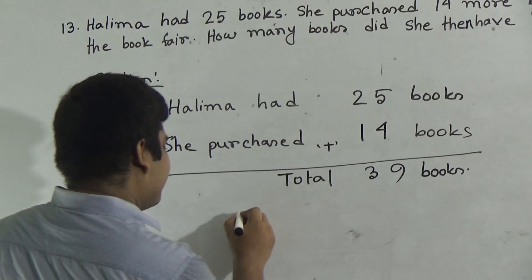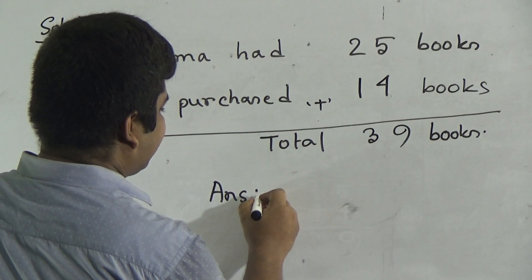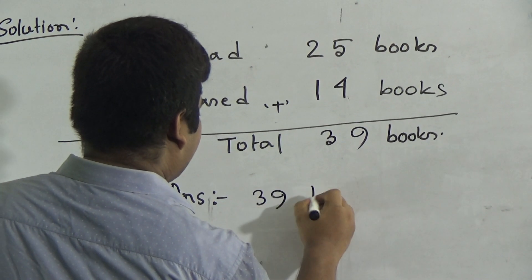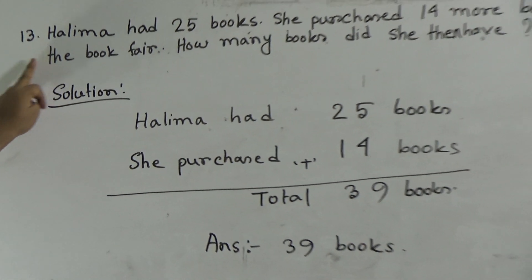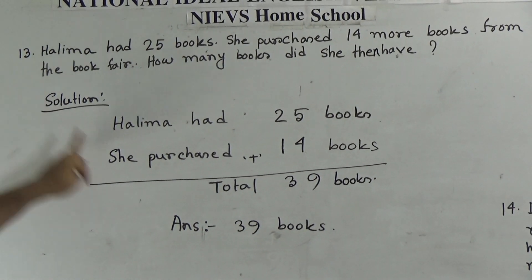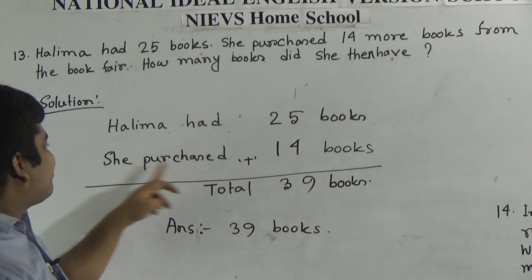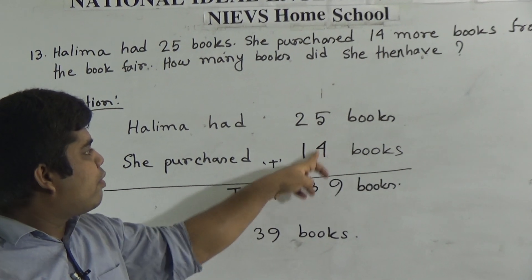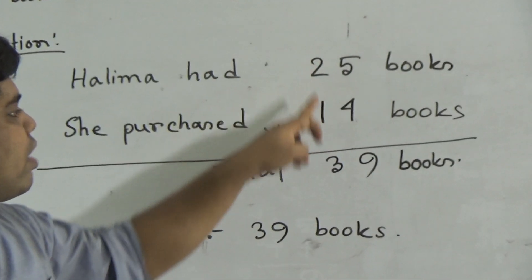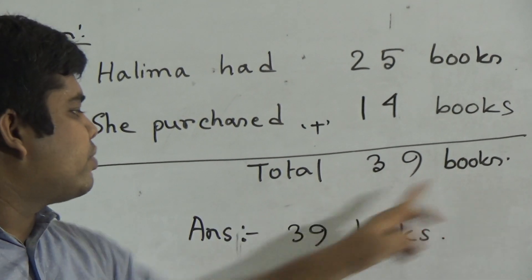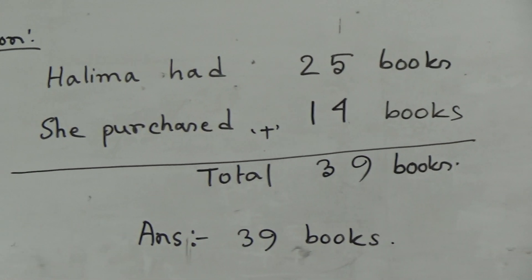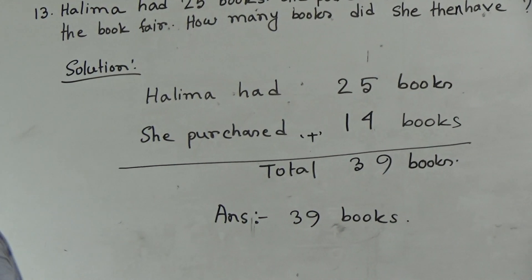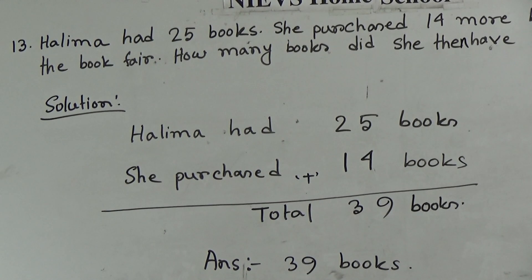And after completing your solution, you must write the answer. Answer: 39 books. My students, you need not copy down the question in your SW copy — just give the question number and start to solve. That means Halima had 25 books, she purchased 14 books, four plus five is nine, two plus one is three, total 39 books. Answer: 39 books. Some of you don't write the answer, but you must write it — otherwise some marks will be deducted. This is question number 13.